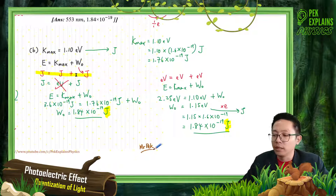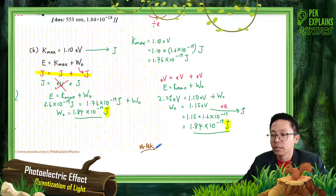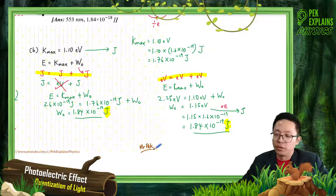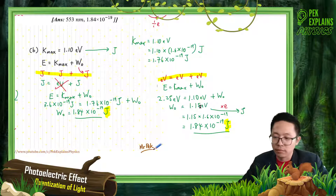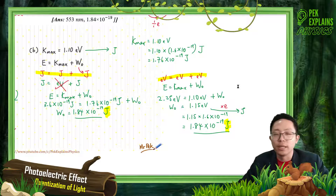Just make sure you use all joule or all electron volt — don't mix them up. To convert from electron volt to joule, multiply by the electron charge. That's all for this video. Thank you for watching and let's move on to the next one.